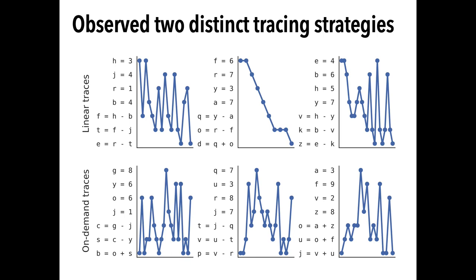We wanted to quantify the relationship between each strategy and working memory. Our hypothesis was that a person is more likely to forget information they visited earlier, and so people tracing linearly would forget more constants, and people tracing on-demand would forget more expressions.